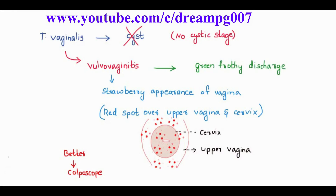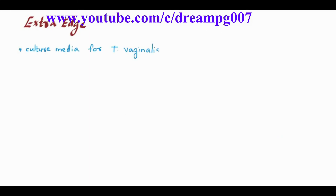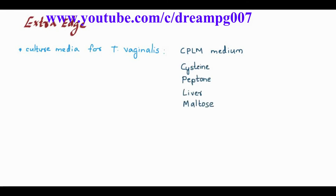Drug of choice for this condition is metronidazole. The culture media used for trichomonas vaginalis is CPLM medium. It contains cysteine, peptone, liver, and maltose.